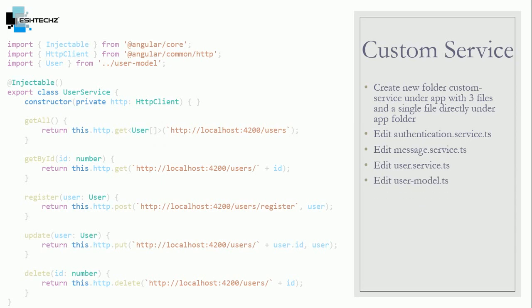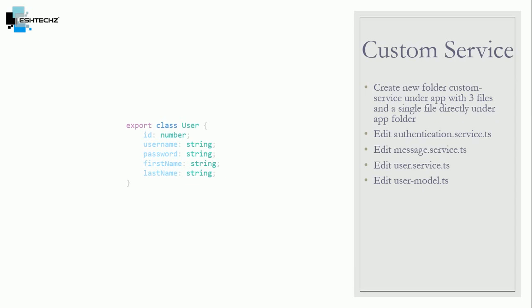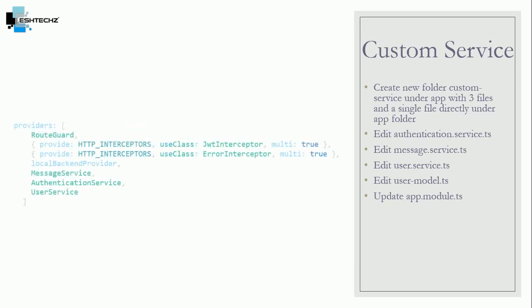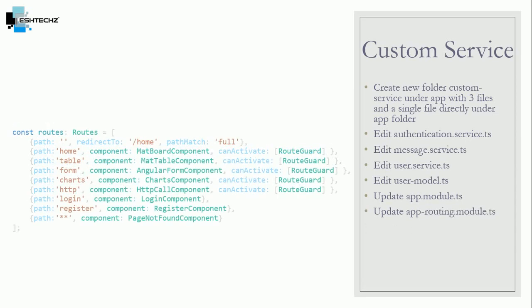The previous three files are service files. We will be using the user model file to pass user data. After this we will be updating app dot module dot ts. Since there were a bunch of files we have created without using Angular CLI, our application doesn't know about them, so we will be adding these files to tell the application we will be using them.